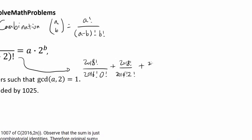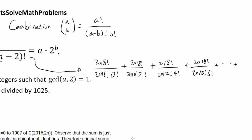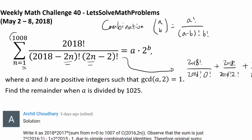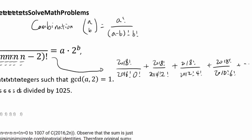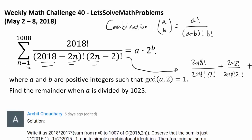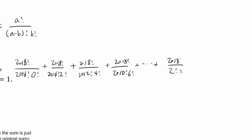We can keep going: 2018 factorial over 2012 factorial times 4 factorial, then 2010 factorial times 6 factorial, and all the way to the upper bound — all the way to 2008 and 1008. We end with 2018 factorial over 2 factorial times 2014 factorial. And what's weird about this is that we start with 2016 and 0, then 2014 and 2, ending with 2 and 2014 — it seems asymmetric.